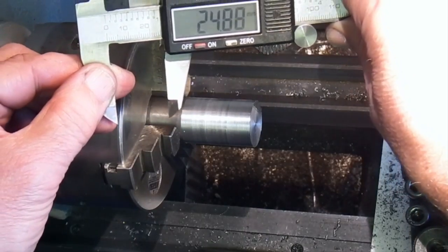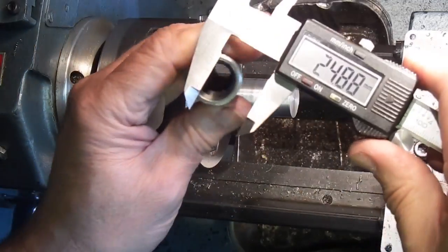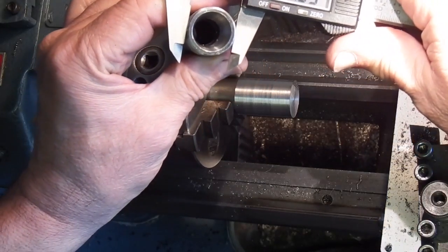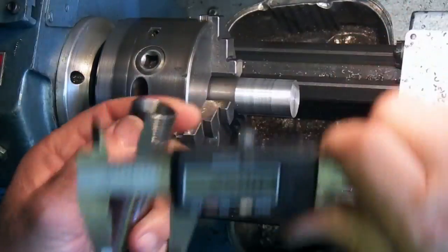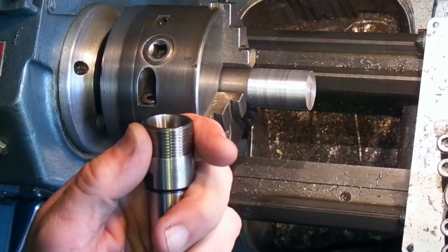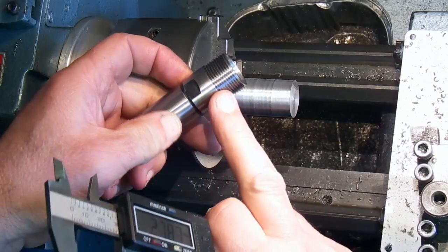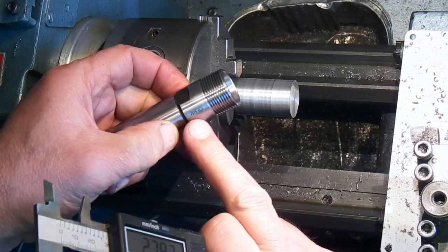That's 24.88. I think this will be too small—24.85. So that is virtually the same size as the outside of that thread. This part behind the thread is a bit bigger, but it doesn't do anything.